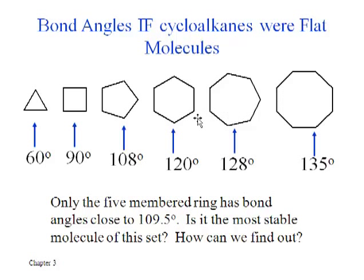To determine for a molecule whether it's stable or not, we have to do some experimentation in the lab to determine whether cyclohexane is more or less stable than cyclopentane. The next slide shows the kind of experiment that would give us that information, allowing us to directly determine which ring sizes are more stable than others.